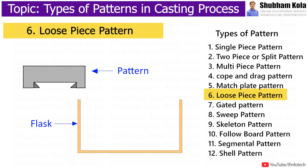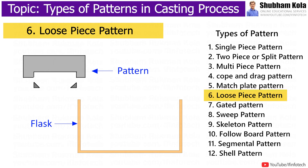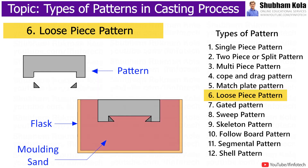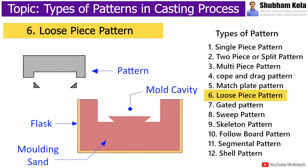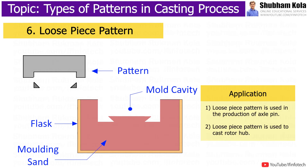The loose piece pattern is used when removal of pattern is impossible due to extended surface at either upper half or lower half. The extended part is made as a loose piece, so this extended part can be removed first before removal of the whole pattern. This makes easy removal of pattern without effect on cavity. It is used in production of axle pin and also used to cast rotor hub.